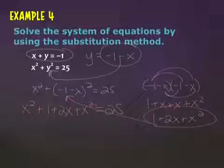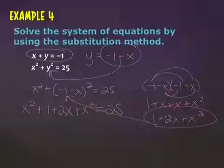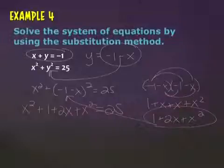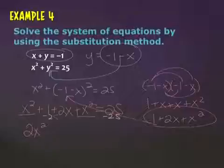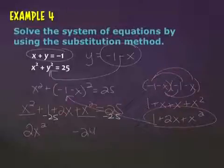As soon as you see x squared and an x, you should know you're going to have to factor. You want to get everything to one side, and make it easy on yourself — put it in order from highest exponent down to none. There are two x squareds, x squared plus x squared, which would be two x squared. Subtract the 25, you'd get negative 24. And then the two x is the last term.